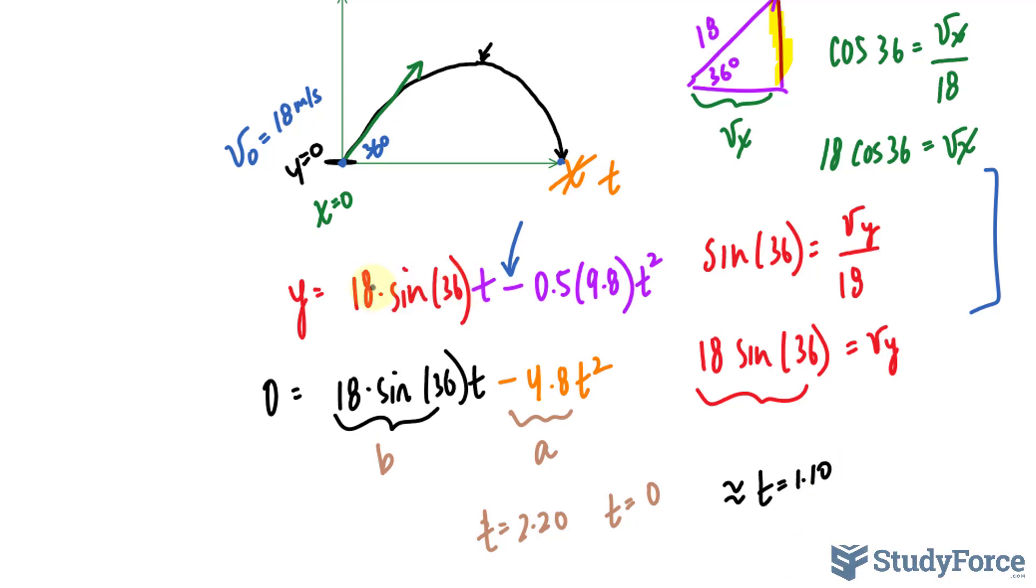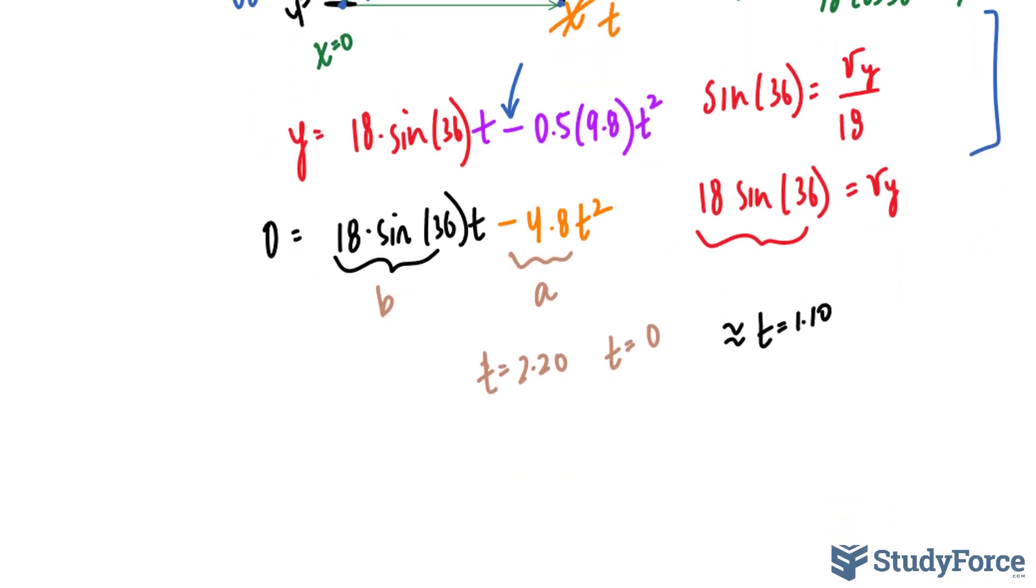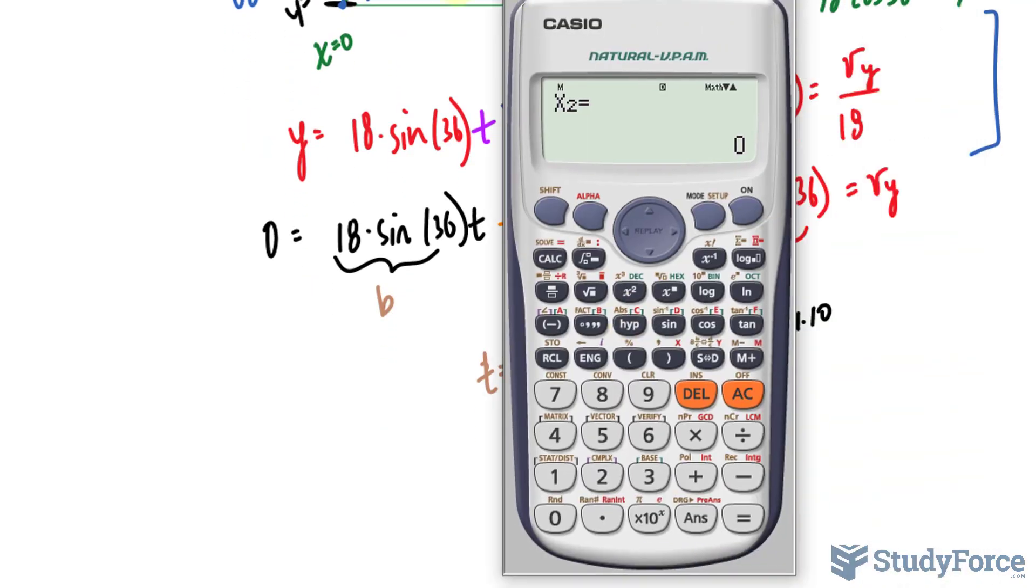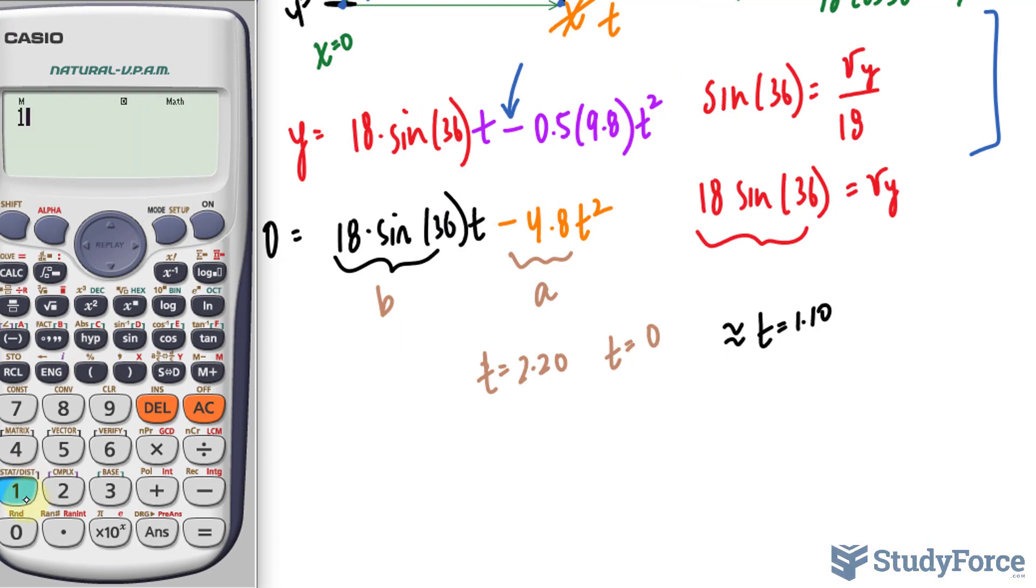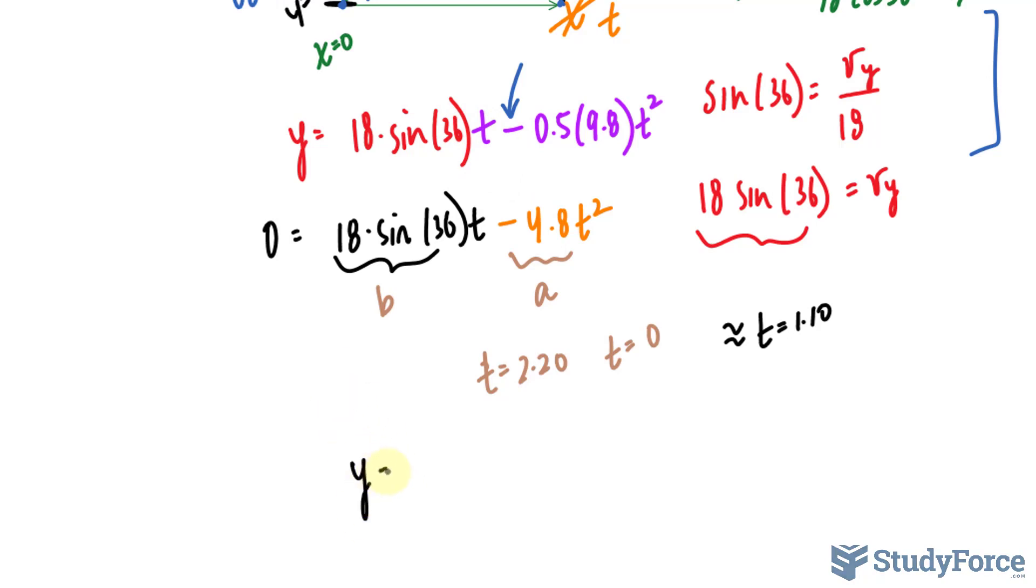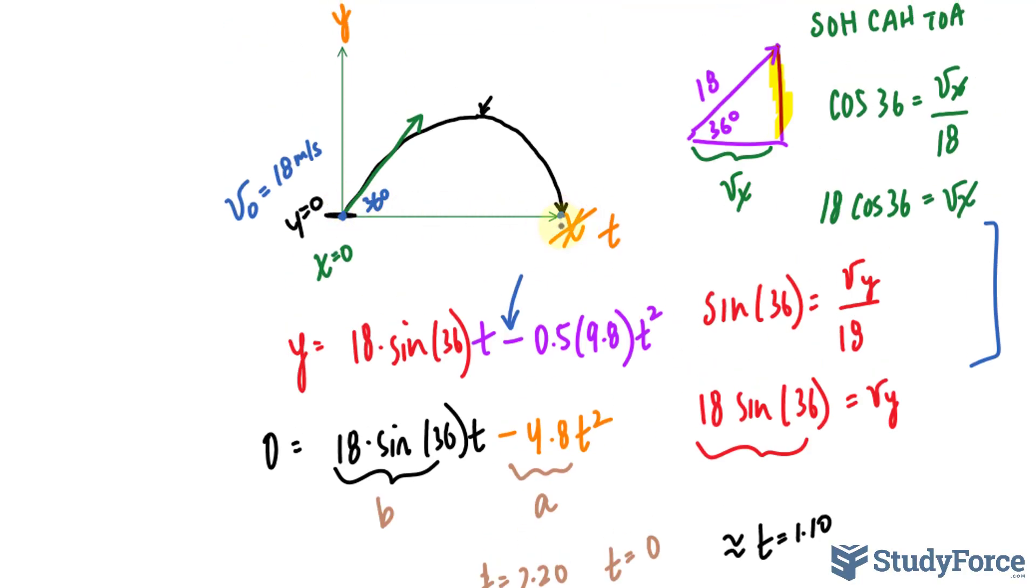Substitute that into this formula, the one that we just made, to get the highest value. And from that, we can actually find the range. So using 1.10, let's go back into our calculator. 18 sin(36) times 1.10, that's that first part of the expression, minus 4.8 bracket 1.10 raised to the power of 2. And we get a y value of 5.83. So y = 5.83 meters halfway along this parabola, this quadratic.